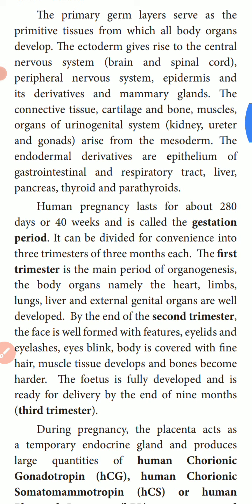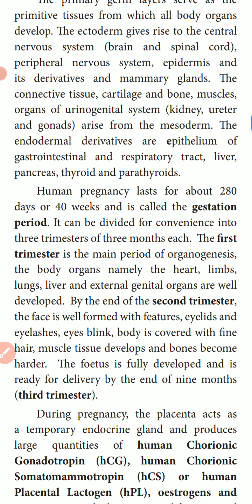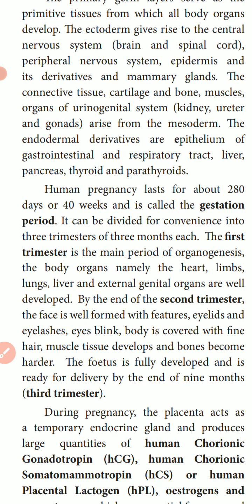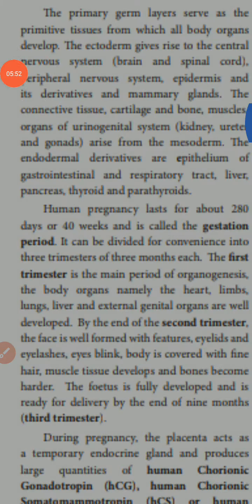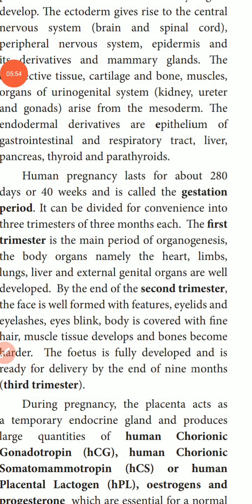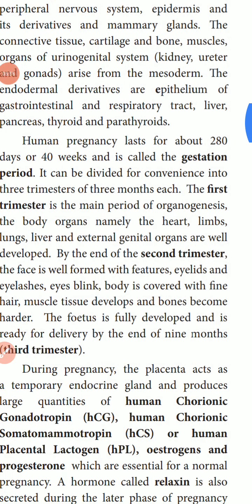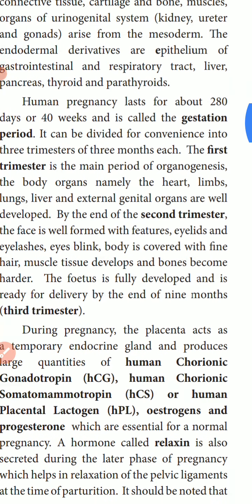Connective tissues, cartilage, bones, and muscles all arise from the mesoderm. Endodermal derivatives or epithelium include the gastrointestinal tract, respiratory tract, liver, pancreas, thyroid, and parathyroid. Each layer produces different organs.